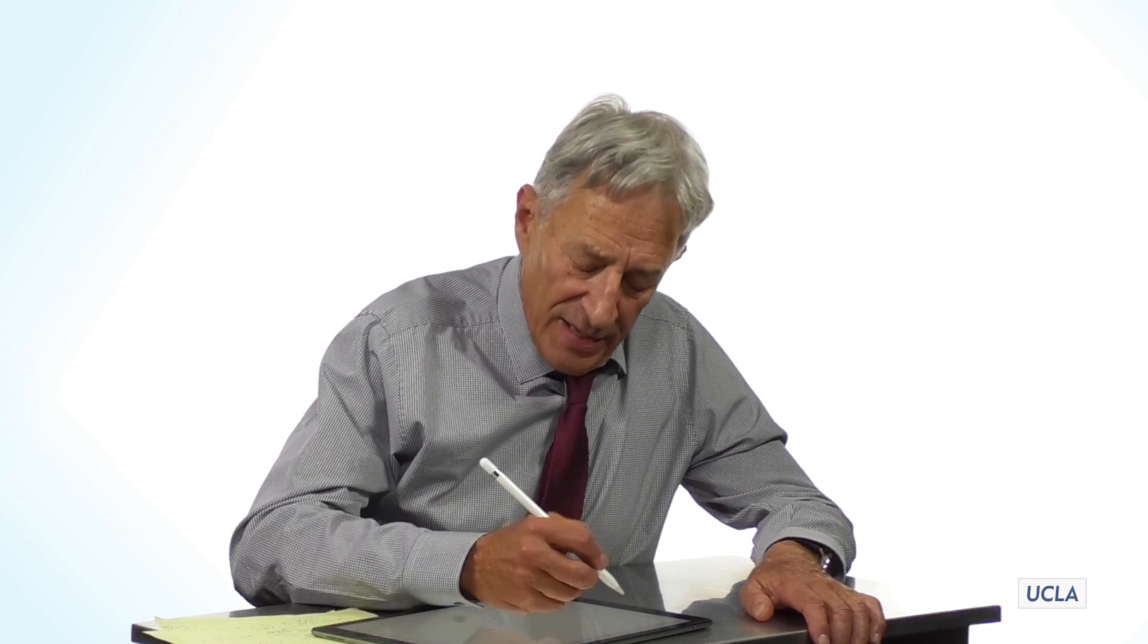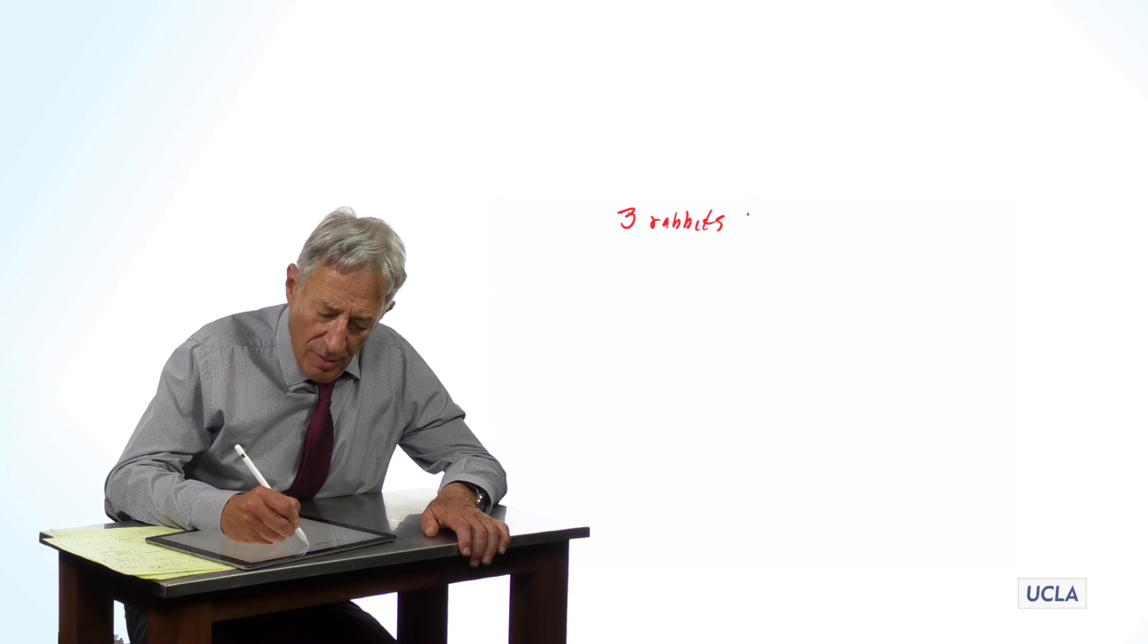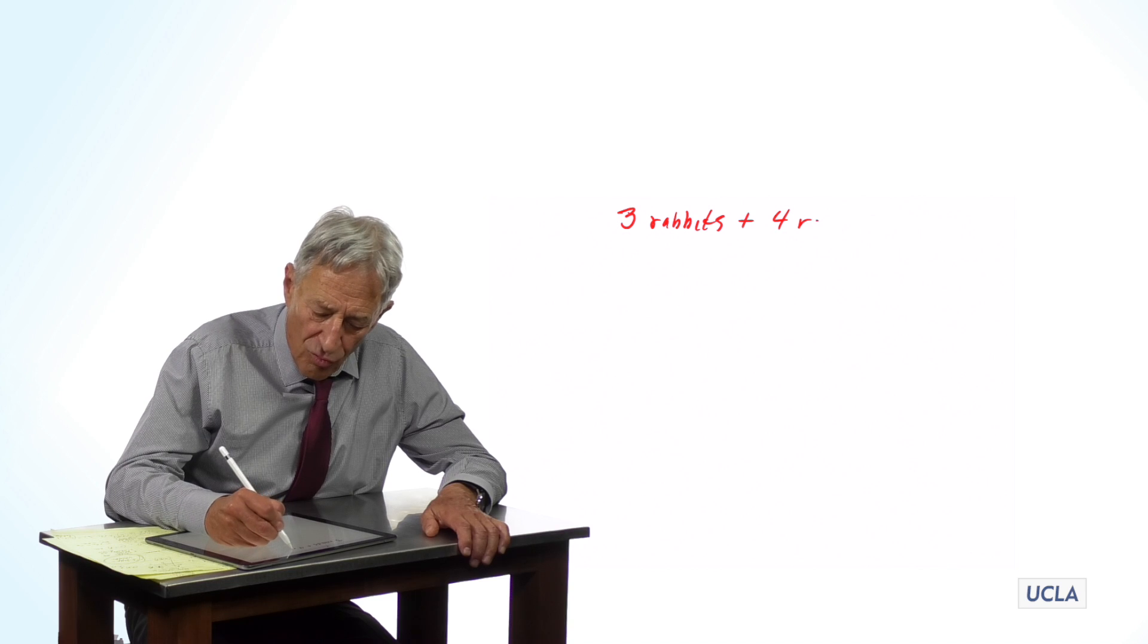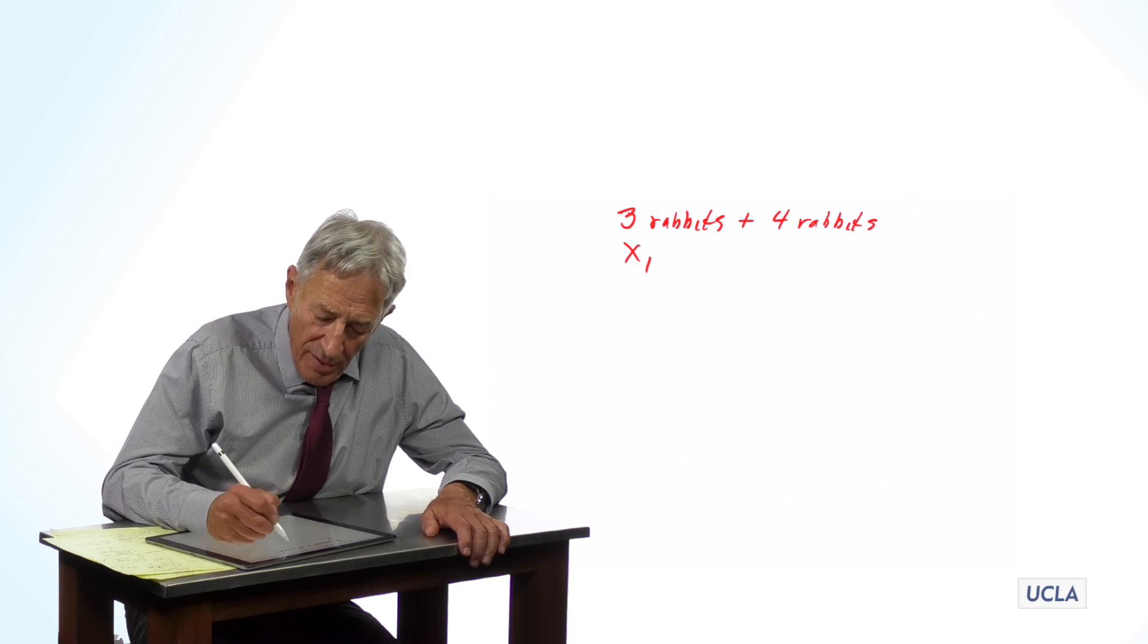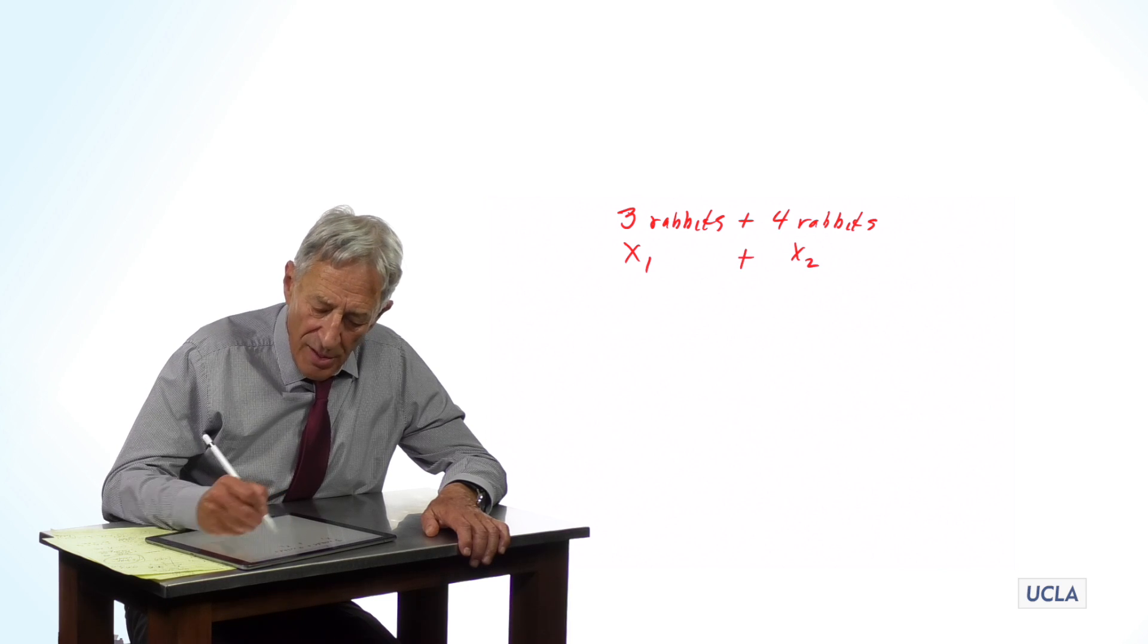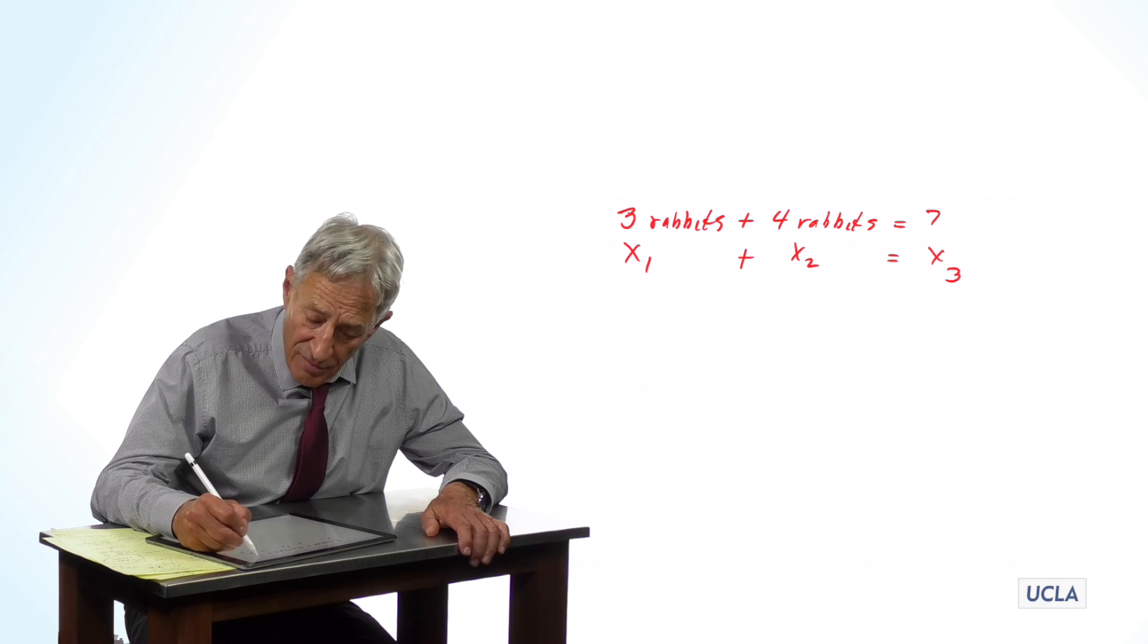So, for example, and this sounds like I'm belaboring the obvious and going back and rediscovering the second grade, but bear with me here. What we are saying is three rabbits plus four rabbits, and this is x1 and this is x2, are going to add to x3, which is in this case seven rabbits.